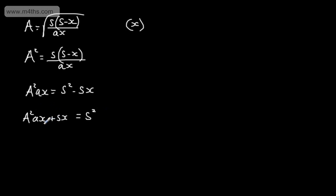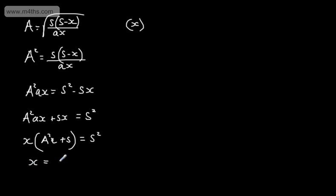Everything on the left-hand side has an X in it, and everything on the right-hand side doesn't. We factor out the X, leaving A squared multiplied by a plus S is equal to S squared. Then simply divide through by the bracket content: X equals S squared over A squared times a plus S. That gives us X in terms of S, uppercase A, and lowercase a — we've made X the subject of the formula.